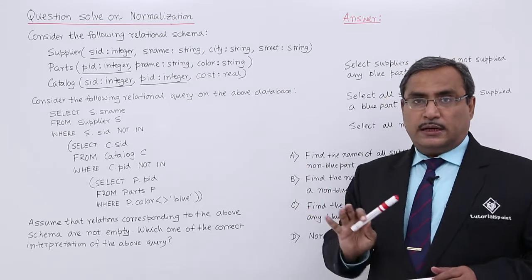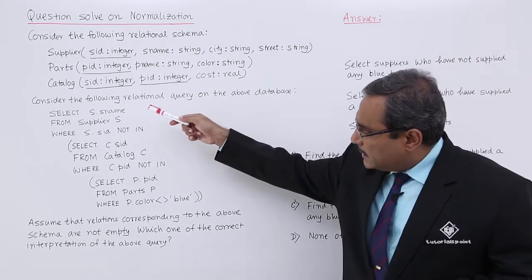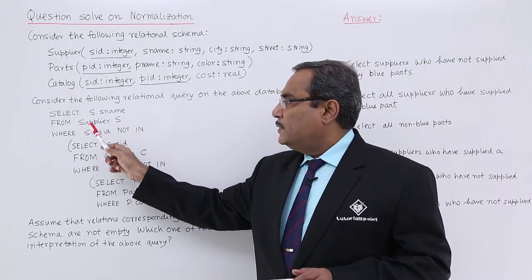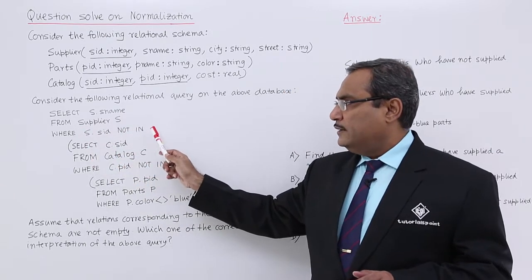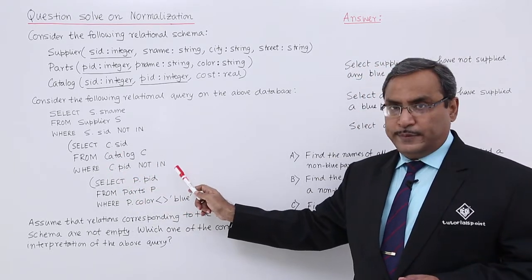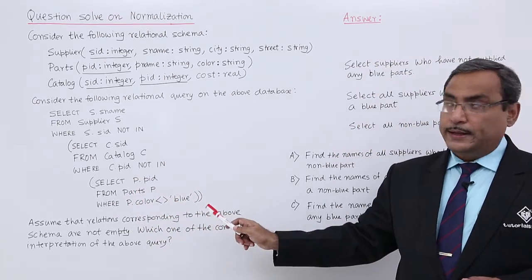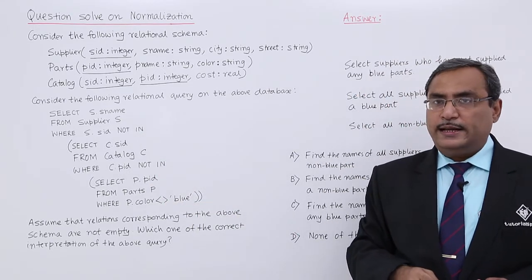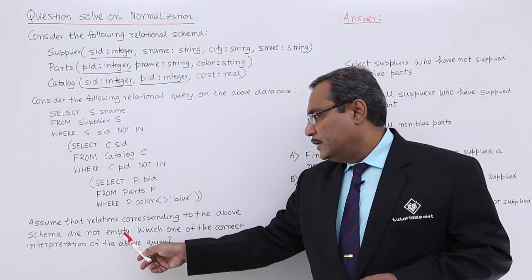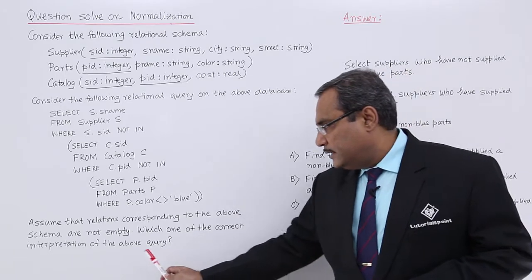Three schemas are given to us. Consider the following relational query on the above database. We are getting a nested query with nested subqueries: SELECT S.sname FROM Supplier S WHERE S.ID NOT IN (SELECT C.SID FROM Catalog C WHERE C.PID NOT IN (SELECT P.PID FROM Parts P WHERE P.color != 'blue')). The relations are assumed to be non-empty — they have tuples and records.